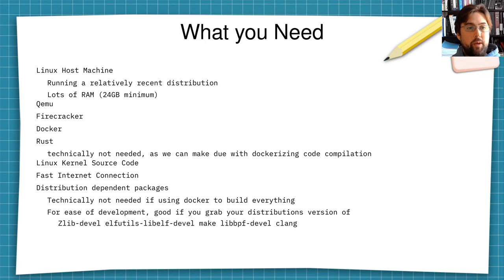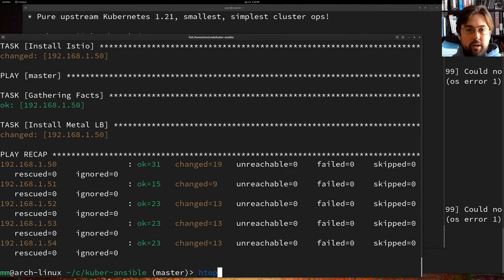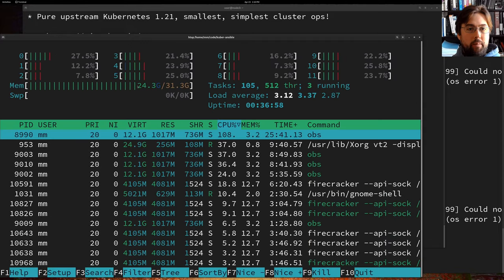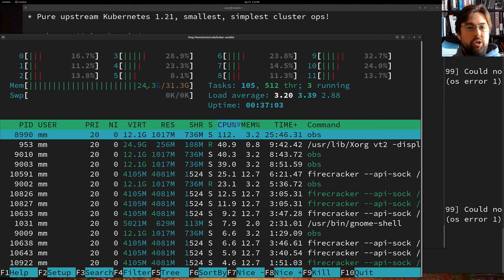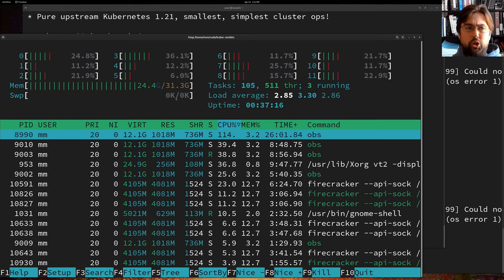So what do you need to be able to follow along with me? You need a Linux host machine or a Linux server running a relatively recent distribution. I am running Arch, however this should work fine on Red Hat 8, Alma Linux 8, Ubuntu 20.04, and similar. The one caveat is that you need a lot of RAM — at least 24 gigabytes on the host machine. Let me show you how much RAM I am using for this demonstration. You actually need a little bit more than 24 gigabytes, as I am also running OBS and Firefox, so take that into account when you see 24.5 gigabytes of RAM being used.